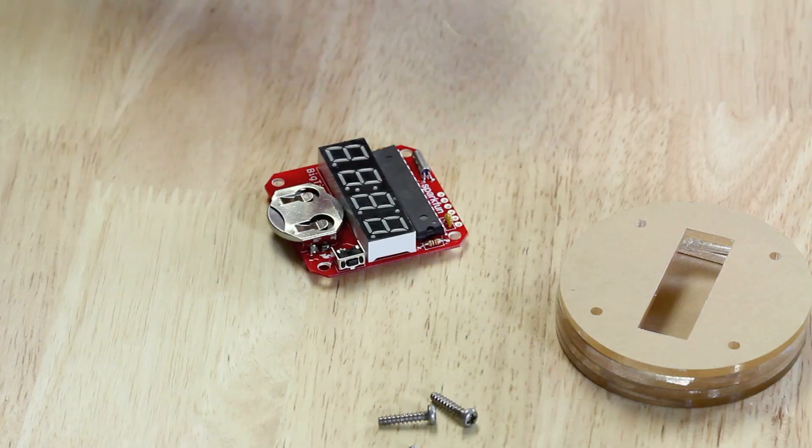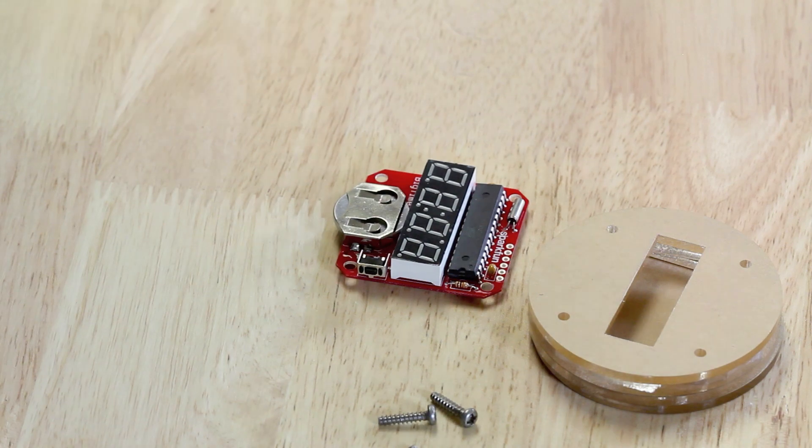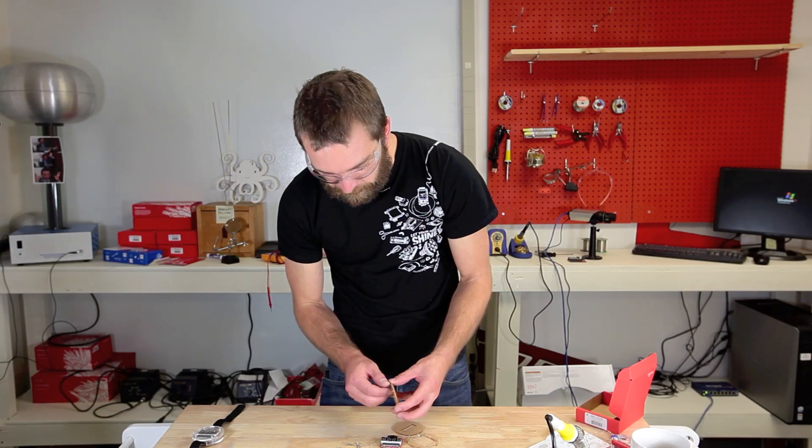Now it's time for final assembly. We're going to be taking these laser cut pieces of acrylic and putting the watch into them and screwing everything together so it's held nice and snug. Step one is to remove the paper backing from these.